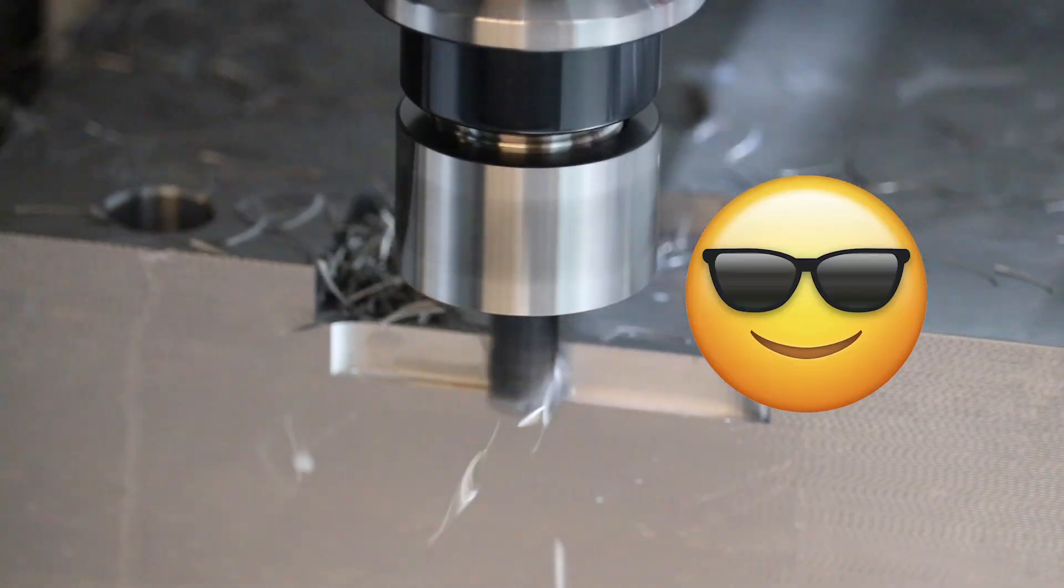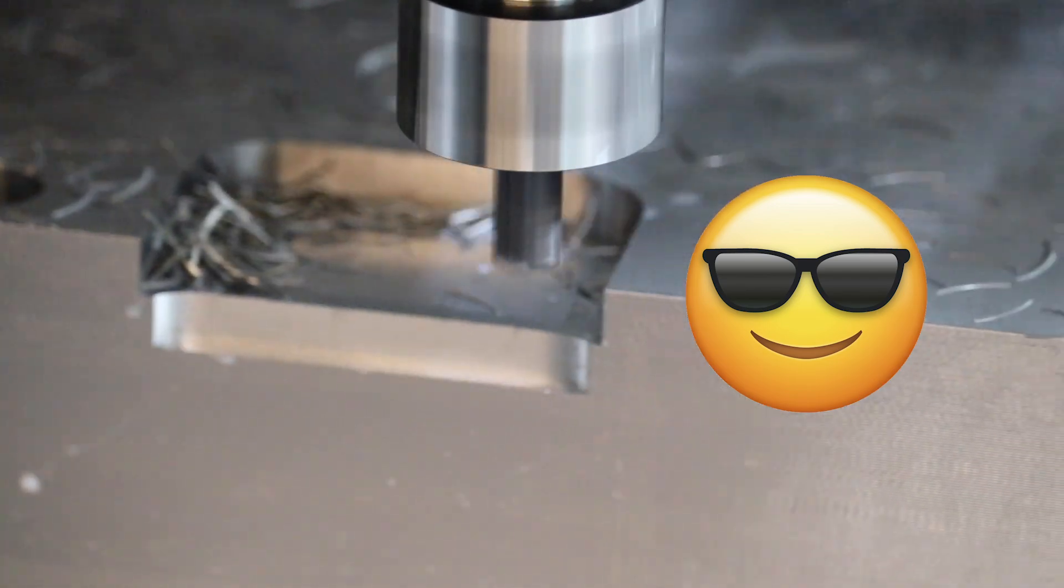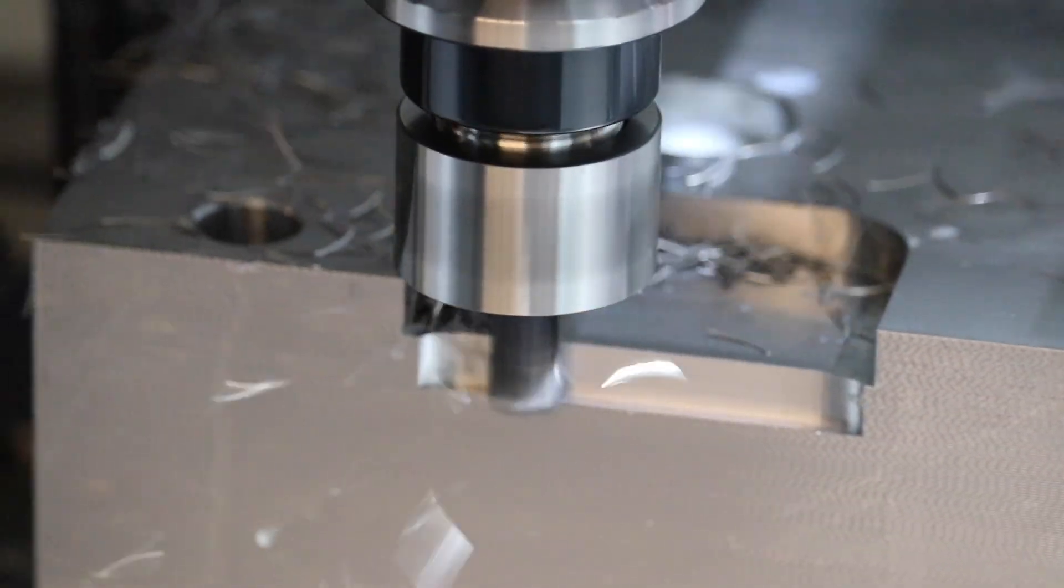There are certain types of endmills and certain types of cuts that are more forgiving that allow for a wider range of feeds and speeds, and there are certain types that are really unforgiving and you got to get it just right or you're going to get some chatter. So with that said, let's get into the video.